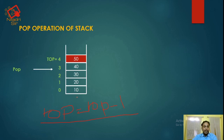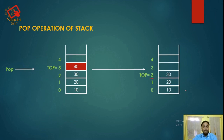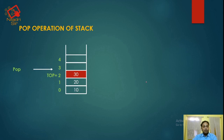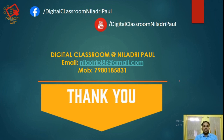The top is at 4, so top will now be 3 after performing the POP operation. Next, top is at 3; after POP, top will be at position 2. Again, we perform POP — top is at 2, so top will be at 1. Next, after another POP, top is at 0, so now top is at minus 1. We are not able to delete any element from the stack. This condition is called underflow condition — stack is empty now.